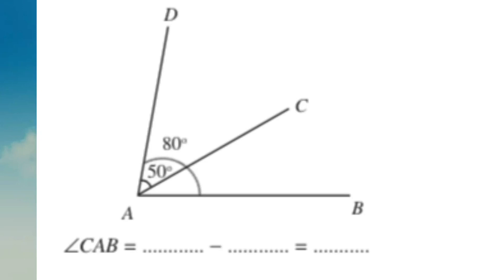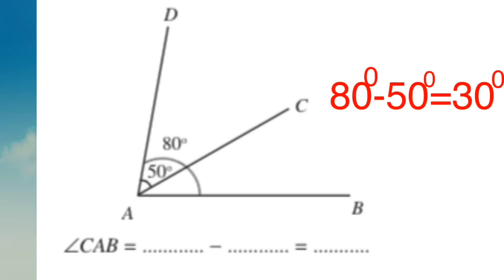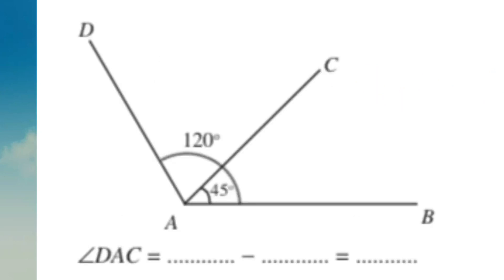There is an angle DAB equal to 50 degrees. In this small angle, we have to calculate the angle CAB. If you don't know the difference between the two angles, we have to calculate the angle CAB using the same method.